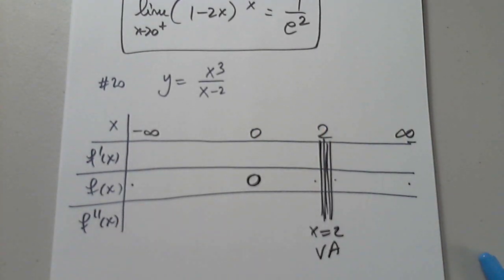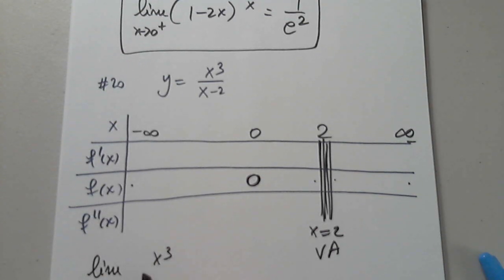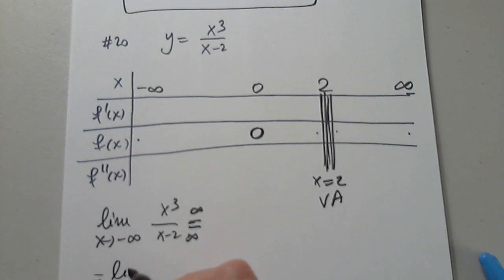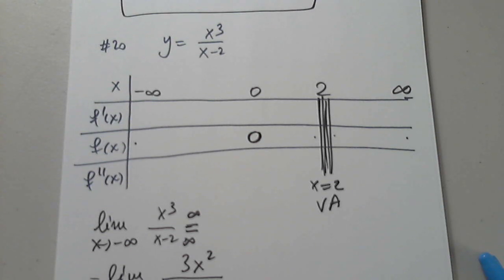So, we have to find the limit as x approaches negative infinity from x to the third over x minus two. And remember what we did, because of course it's infinity over infinity. So, one option would be to just differentiate because it's L'Hopital's rule. So, let's just do that. That's the easiest thing to do. I was going to factor x, but we have L'Hopital's rule. Why bother? So, then we have limit as x approaches negative infinity. Can anyone differentiate x cubed? 3x squared. Excellent. Can anyone differentiate x minus two? Number one. Awesome.